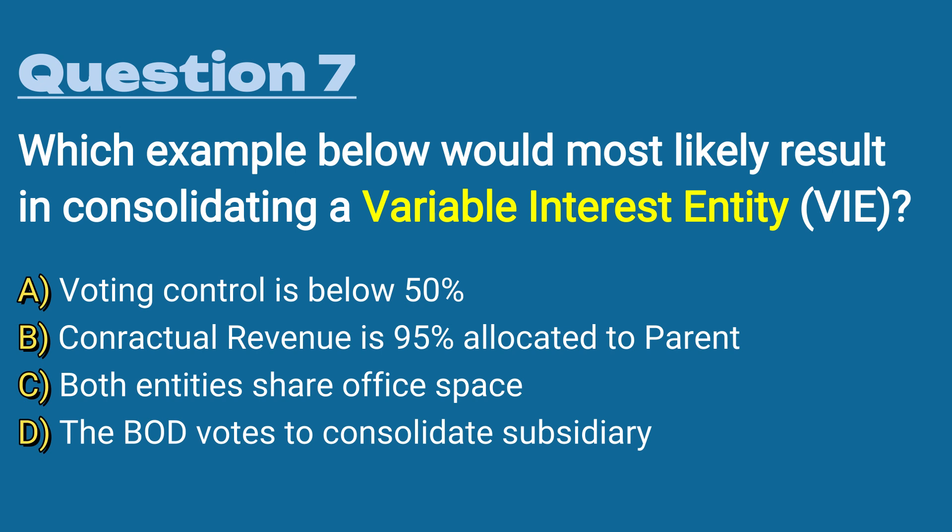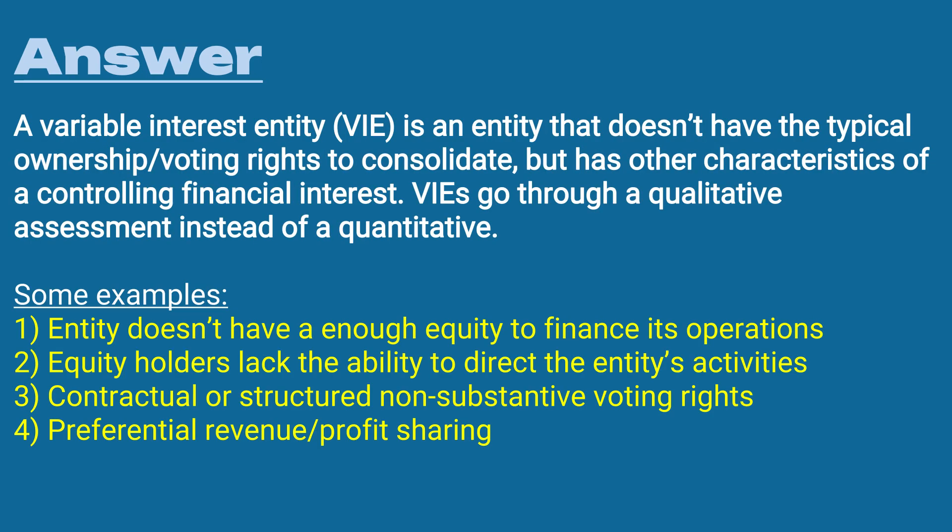The answer is B) contractual revenue is 95% allocated to the parent. A variable interest entity is an entity that doesn't have the typical voting rights to consolidate but has other characteristics of a controlling financial interest. VIEs go through a qualitative assessment instead of a quantitative one. Examples include: the entity doesn't have enough equity to finance its operations, equity holders lack the ability to direct the entity's activities, contractual or structured non-substantive voting rights, or preferential revenue and profit sharing. In this example, the subsidiary contractually allocated 95% of its revenue to the parent.